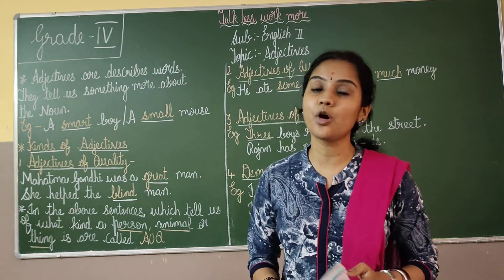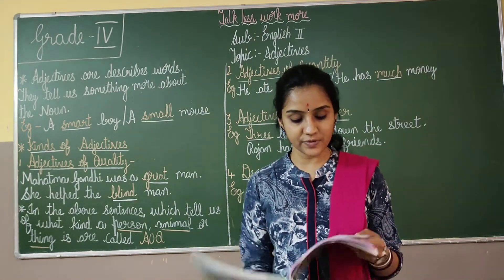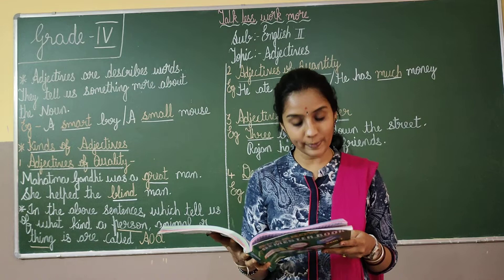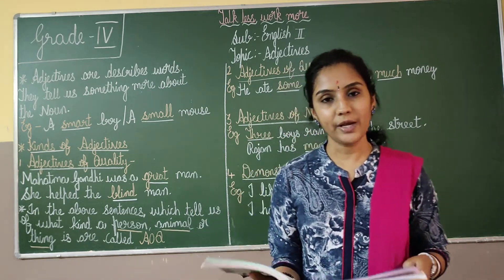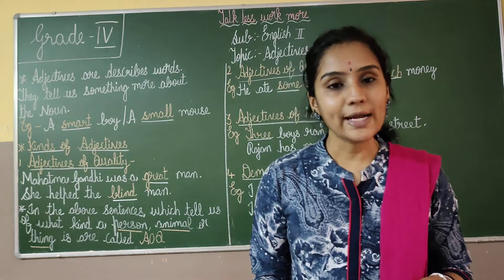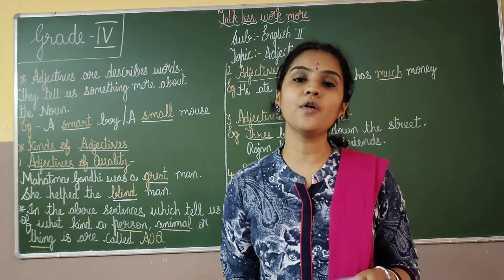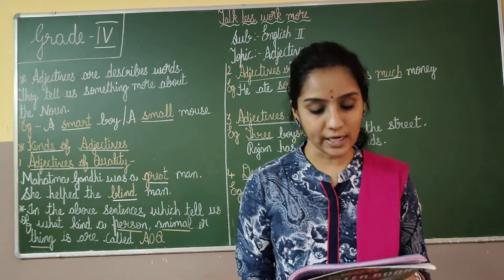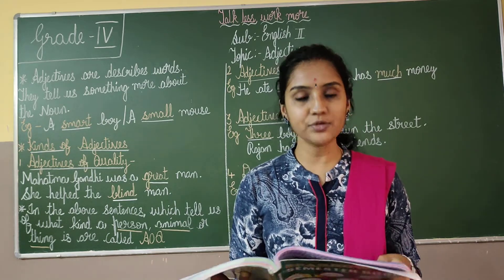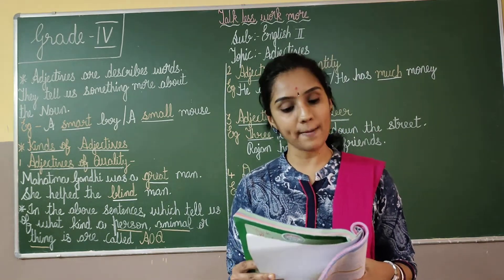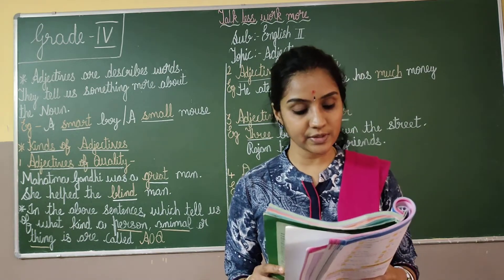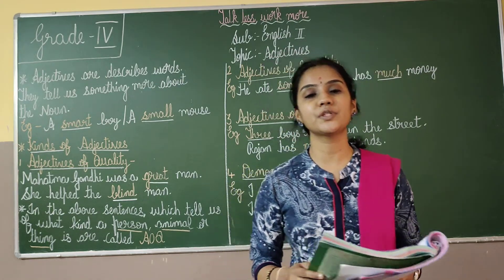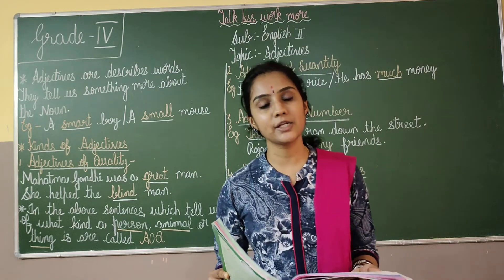Now, in this lesson we have kinds of adjectives. How many kinds of adjectives are there, children? There are six kinds of adjectives. You can take page number 70. Kinds of adjectives — there are six kinds: adjectives of quality, adjectives of quantity, and adjectives of number, among others.